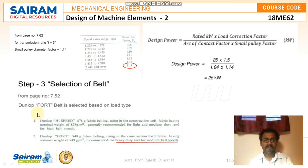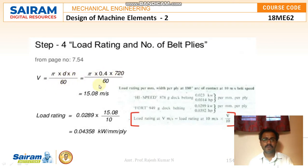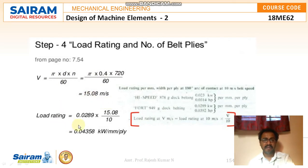Step 3: Selection of the belt. The Dunlop Fort belt is selected based on the load type — it is heavy duty, for medium belt speeds and shock loads. Step 4: Load rating and number of belt plies. Velocity = πdN/60. With known d and N, velocity = 15.08 m/s. Load rating = 0.028 × (15.08/10) = 0.04358 kW per mm per ply.